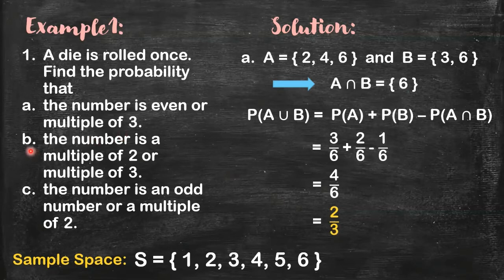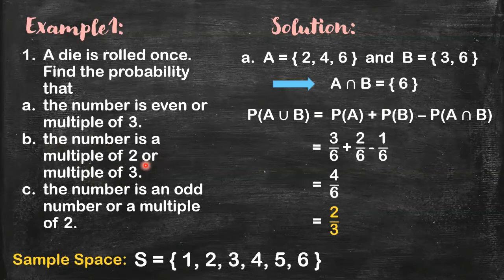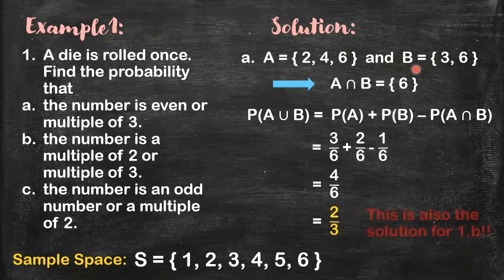Now if we move on to letter B, we have these two events - the event of getting a number that is a multiple of 2, and then the other event is the event of getting a number that is a multiple of 3. If set A contains all the multiples of 2, what's in set A? 2, 4, 6, right? Then set B, all multiples of 3. So you have 3, 6. So the solution for letter A is also the solution for letter B. So we now move on to letter C.